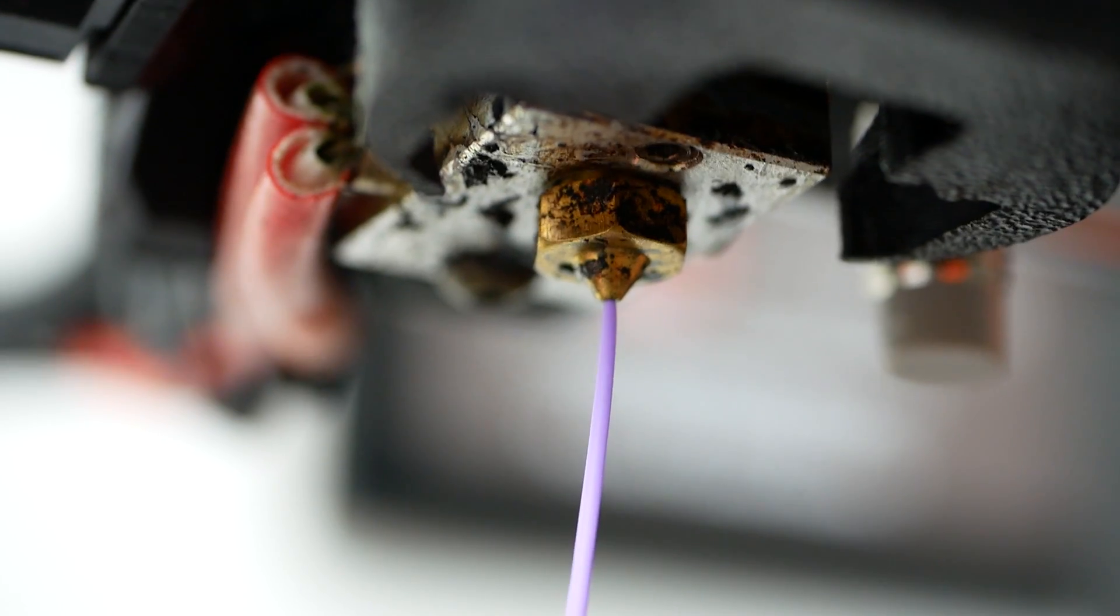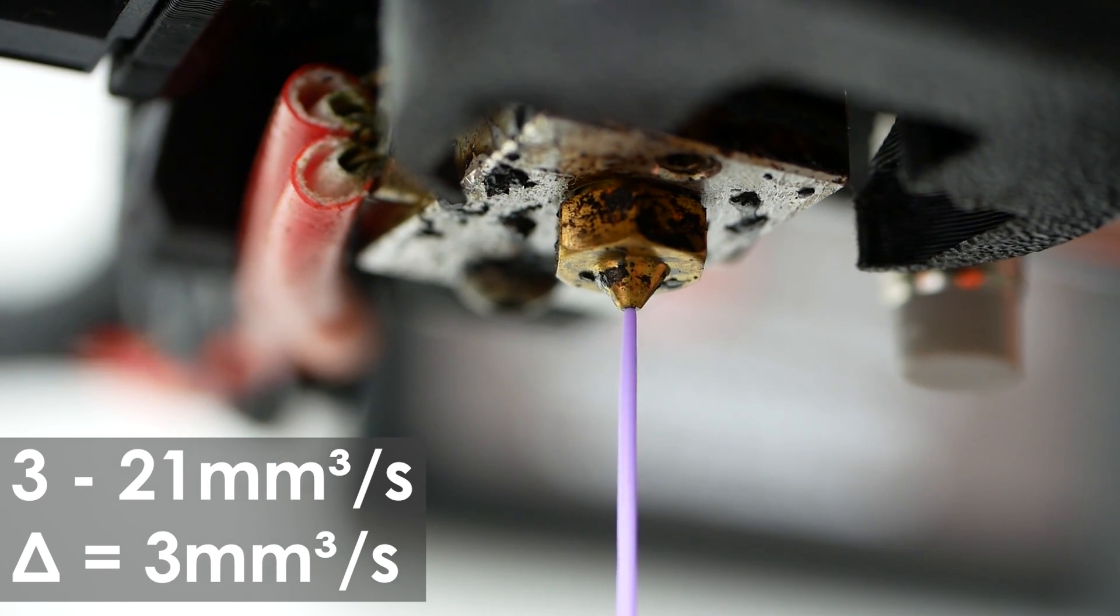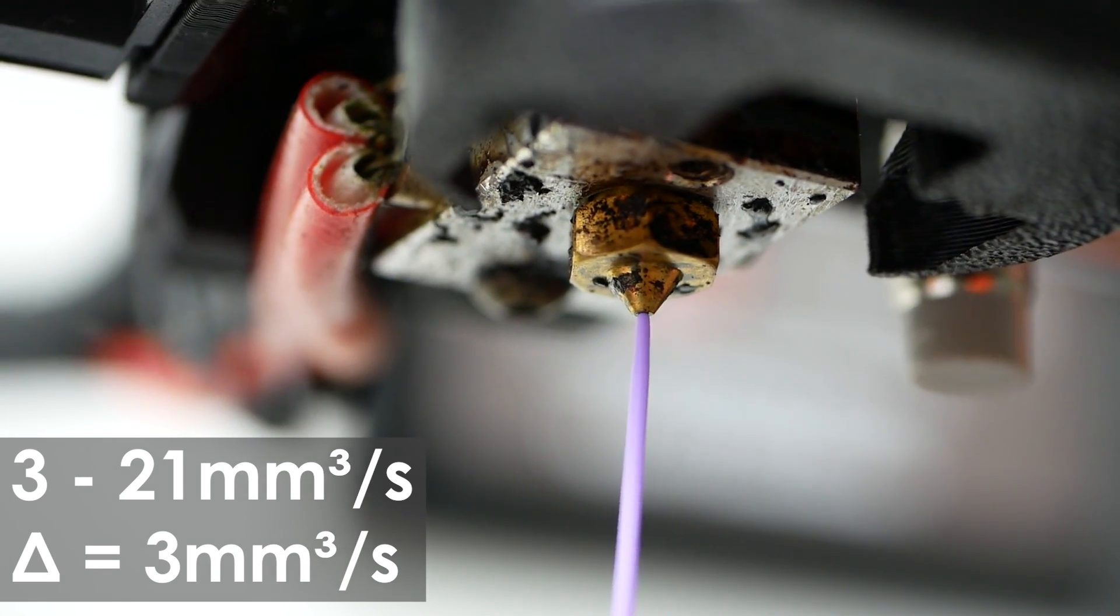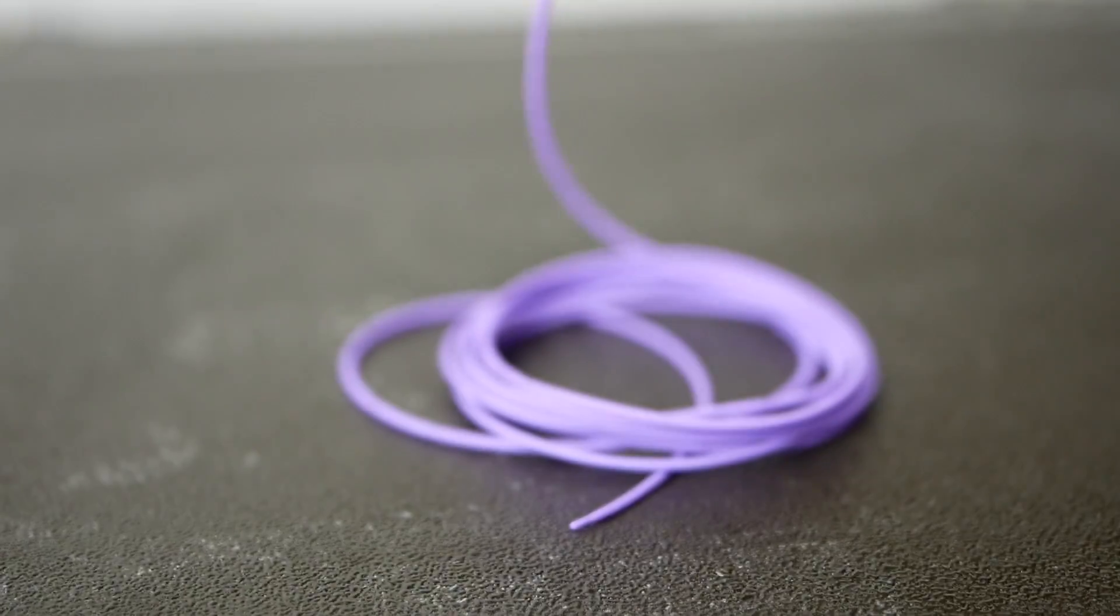So I started extruding the material at a slow 3mm³ per second and increased it in 3mm³ steps. The lowest speed is equivalent to printing with a 0.4mm nozzle at 0.12mm layers at 50mm per second.